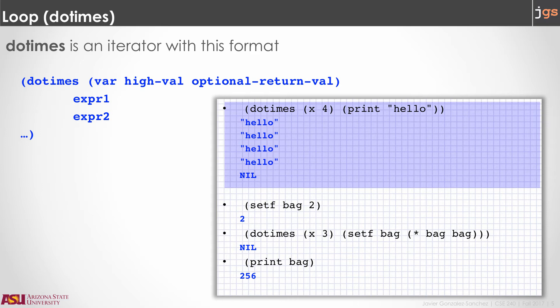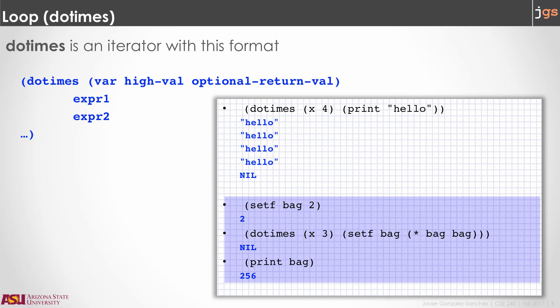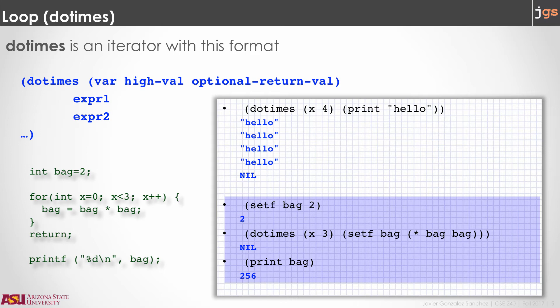You have the prints with hello and you have the return value of DOTIMES, which is nil because we only specified X and 4 without the optional return value. An equivalent source code in C could be something like this. In the second example, we are creating a global variable. We are going to talk more about that in the next slides. But here, basically, we are using the variable to calculate something inside the loop, and finally we print the value of the variable on the screen.